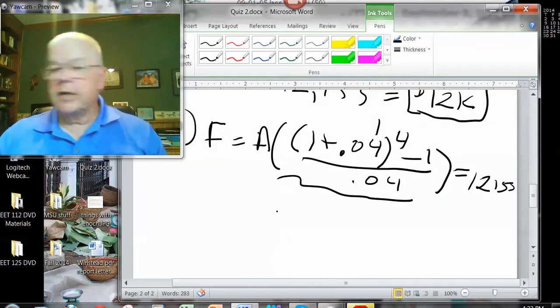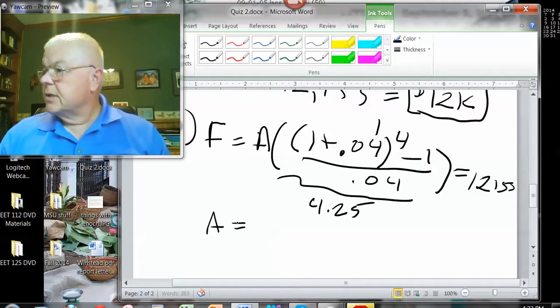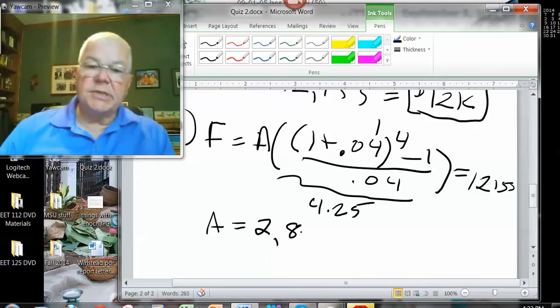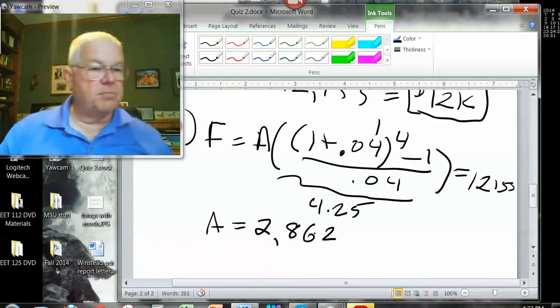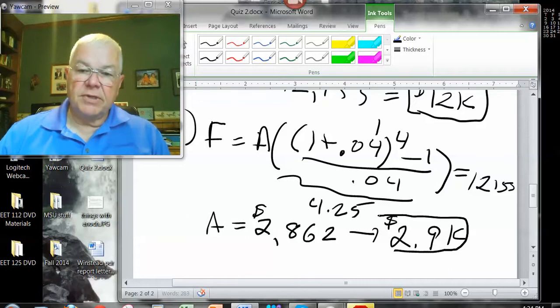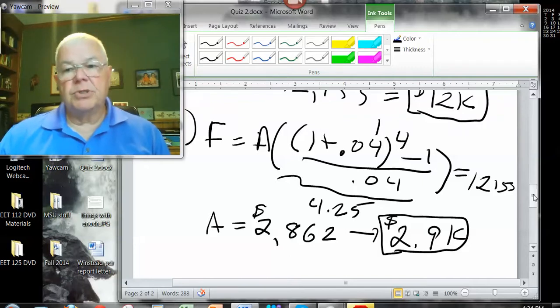This factor right here, what did I get, is 4.25, is what this winds up being, so the amount they have to put in there is $2,862 is what I got. So we would round that off to $2.9k to two digits, so that would be part B. They have to save $2.9 thousand a year, and if they set this much aside, and they earn 4%, at the end of four years, they should have $12,000 so they can buy the machine.